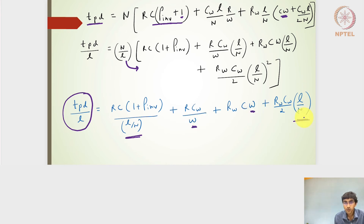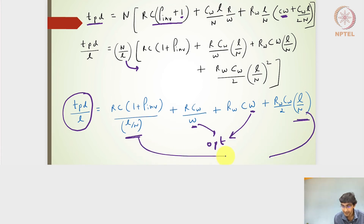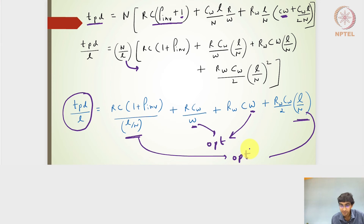To find the best delay per unit length of the wire, we substitute the optimum w and optimum l/n into the delay-per-unit-length expression. Substituting both optimal parameters should give the minimum possible delay per unit length of the wire.